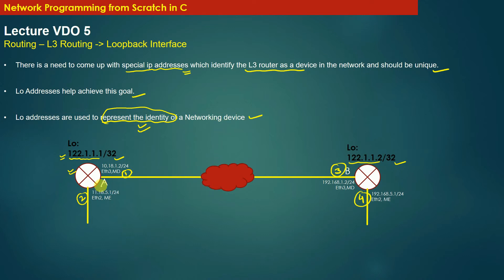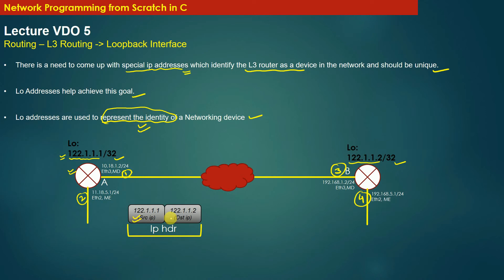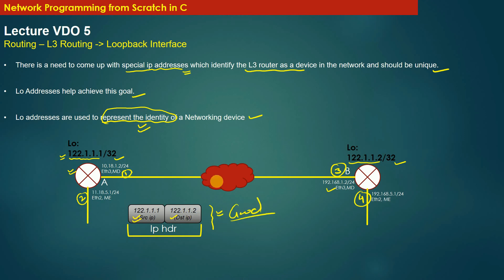If machine A wants to send data destined to machine B, it is good practice for machine A to specify the source IP address as its own loopback address and specify the destination IP address as the loopback address of the destination machine. However, if machine A specifies the source IP as any of its local interfaces and the destination IP as any local interface of the destination machine, the packet would still be routed the same way and eventually reach machine B. Specifying source and destination IP addresses as loopback addresses is a good networking practice.